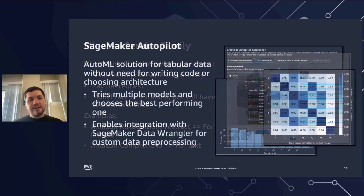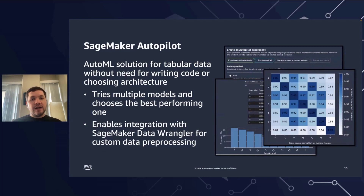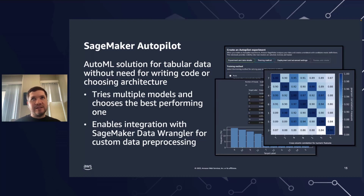Next is SageMaker Autopilot — an AutoML solution for tabular data where you can train a model without writing code or choosing an architecture. Based on the data you provide, it will try multiple models and choose the best performing one. You can easily integrate it with SageMaker Data Wrangler to have custom data pre-processing — also no code necessary. You can basically organize a data pre-processing pipeline using a UI tool.